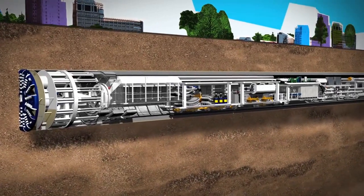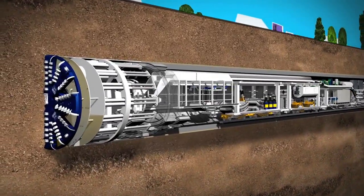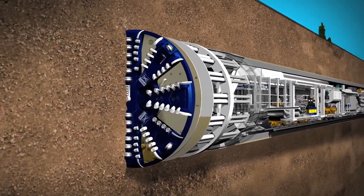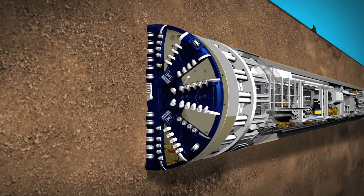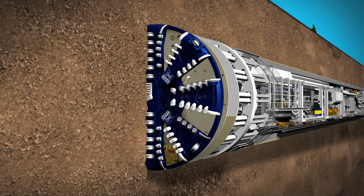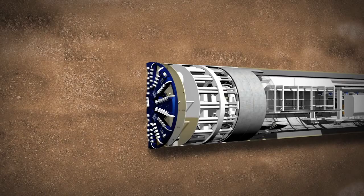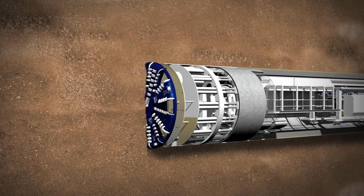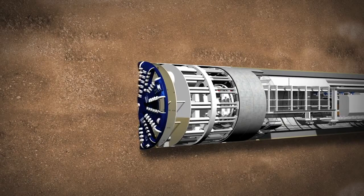The mixed shield TBMs dig in a different way to the earth-pressure balanced TBM and will be used for tunnelling in waterlogged conditions such as below the Thames. Mixed shield TBMs use bentonite, which is a slurry of clay and water.